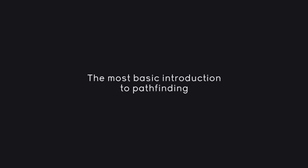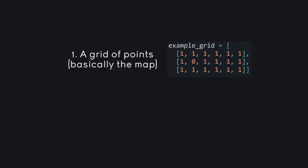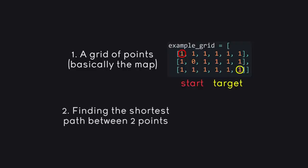Before we get into the code it's useful to cover some basic pathfinding theory — and don't worry, it's going to be short. Whenever we talk about pathfinding we talk about two things. First, we have a grid of points where some can be walked over and some cannot. A grid could look like this, where a 1 is a movable field and a 0 is a wall. Inside this grid we define a start and a target cell, and between those two points we try to find the shortest path.